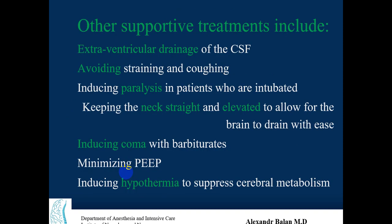Other supportive treatments include extraventricular drainage of cerebrospinal fluid, avoiding straining and coughing — as straining by increasing intra-abdominal pressure and coughing both increase intracranial pressure. Introducing paralysis in intubated patients and keeping the neck straight and elevated also helps. Barbiturate coma is used to suppress brain activity. Minimizing PEEP (positive end-expiratory pressure) administered through the ventilatory machine is important, as it increases pressure at the end of expiration.